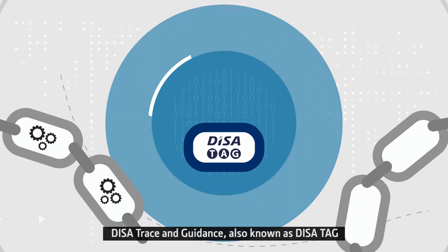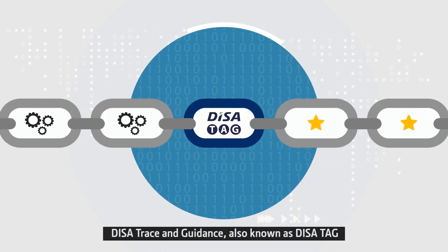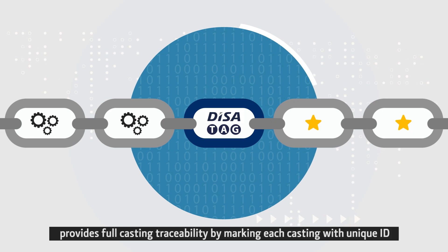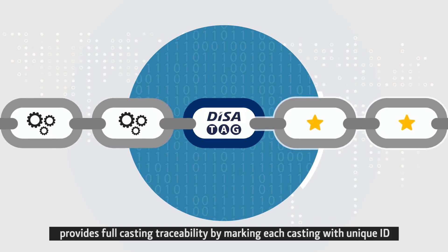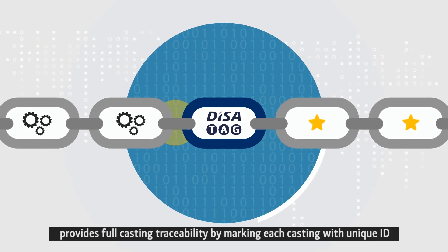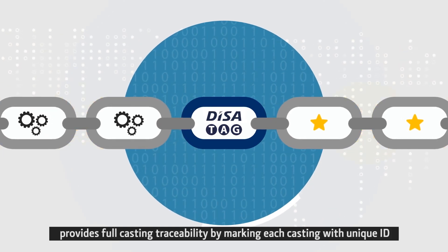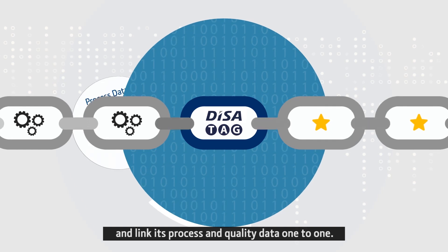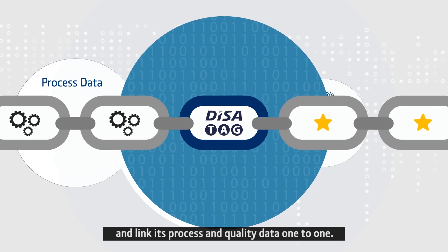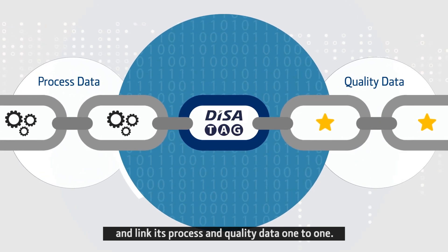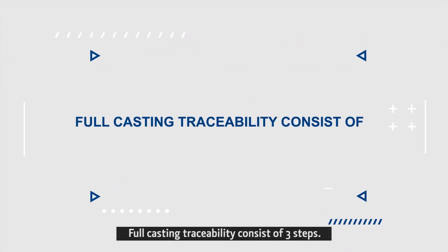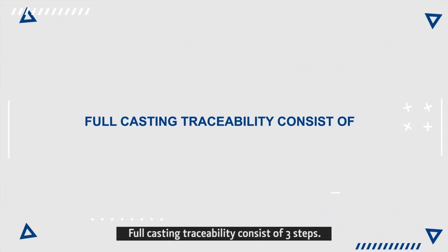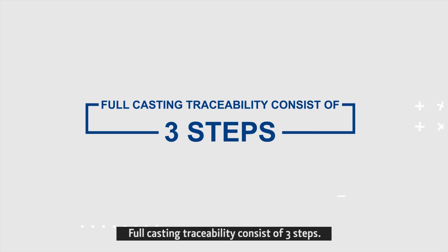DISA Trace and Guidance, also known as DISA TAG, provides full casting traceability by marking each casting with a unique ID and linking its process and quality data one-to-one. Full casting traceability consists of three steps.